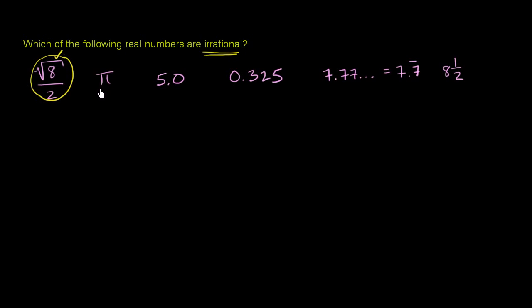Now you have pi. 3.14159 just keeps going on and on forever without ever repeating. So this is irrational, probably the most famous of all the irrational numbers.